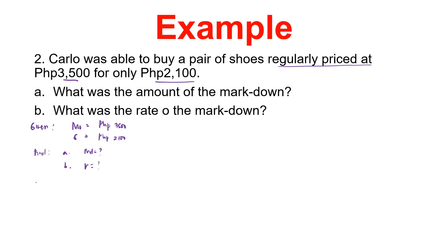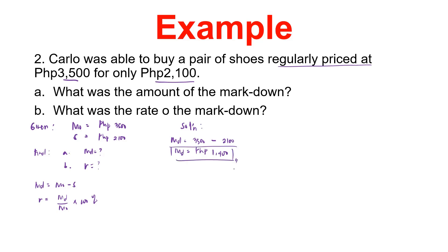Let's list down the formulas. To get the markdown, subtract the cost price and the selling price. For the rate, get the quotient of the markdown and the cost price times 100 percent. For our solution, to get the markdown: cost price 3,500 minus selling price 2,100 gives a markdown of 1,400. Carlo's discount is 1,400 pesos. To get the rate: 1,400 over 3,500 times 100 percent gives a rate of 40 percent.